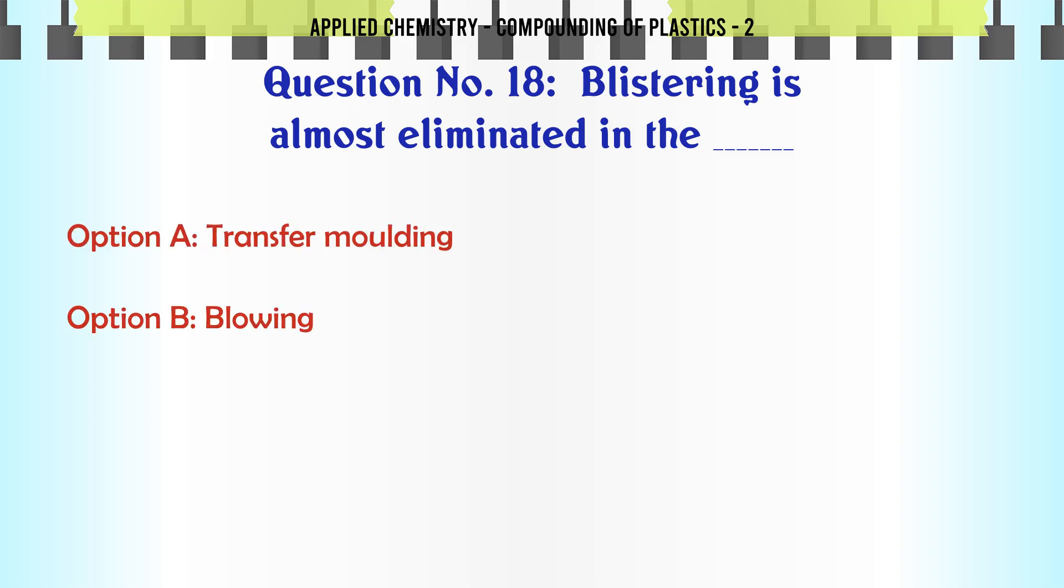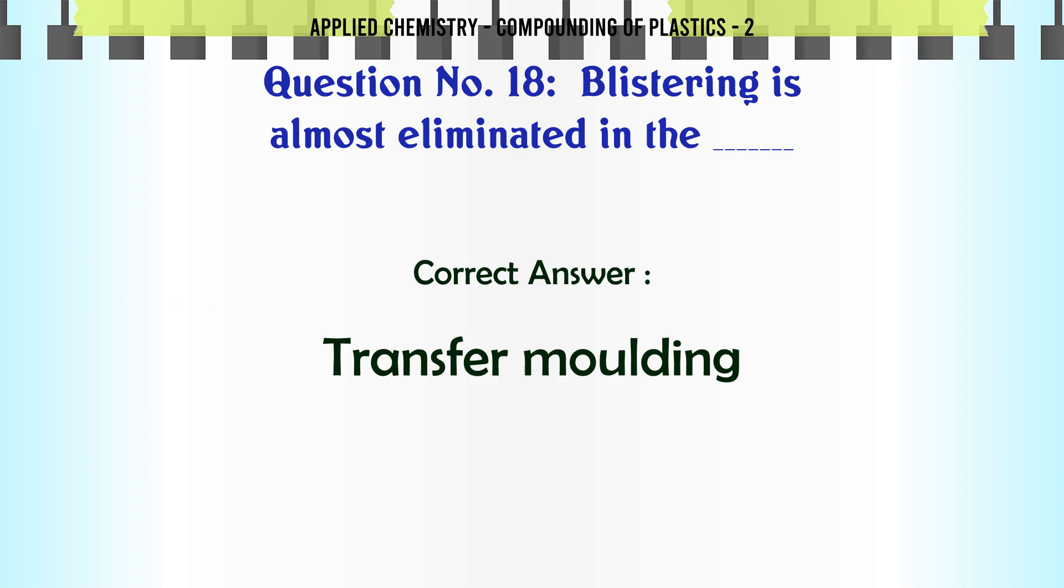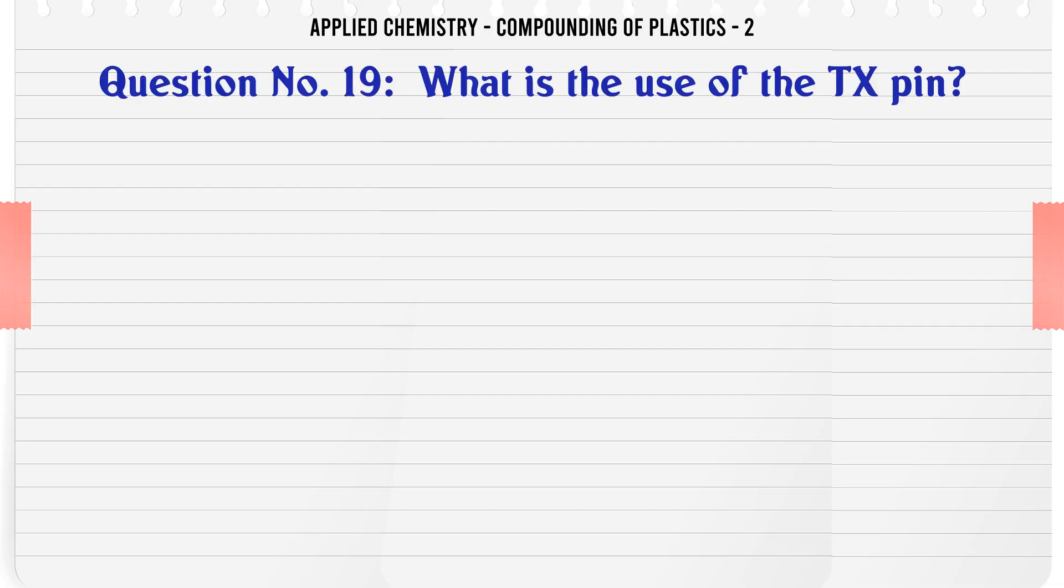Blistering is almost eliminated in the A. Transfer molding, B. Blowing, C. Extrusion molding, D. Injection molding. The correct answer is Transfer molding.